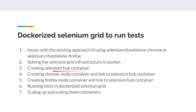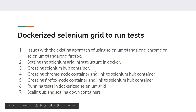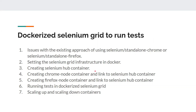These are the different steps we will follow: we will create our hub container, then we will create the Chrome node, then the Firefox node, and then run our tests in the Dockerized Selenium Grid. That is the ultimate goal — to execute our Selenium test cases in a container. We'll also see how to do the scaling up and scaling down operations when setting up this grid.